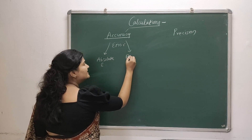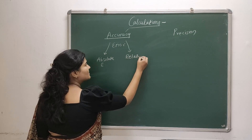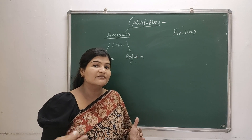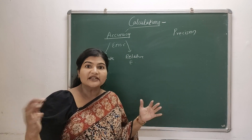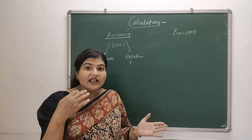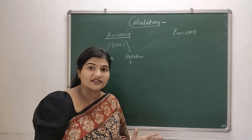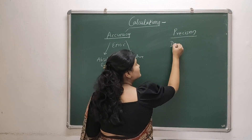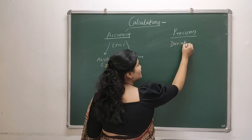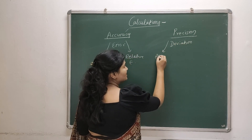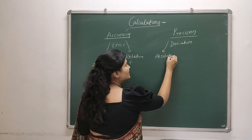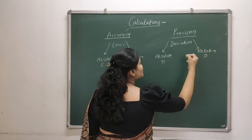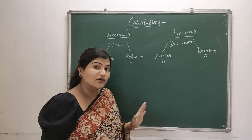Precision is the reproducibility of results — you take multiple readings and see how close those readings are to each other. Precision is expressed in terms of deviation, so we will be calculating two types of deviation: absolute deviation and relative deviation. We are going to discuss everything about this today.